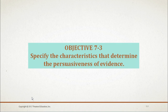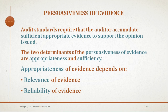Auditing standards require that the auditor accumulate sufficient appropriate evidence to support the opinion issued for the financial statements. The auditor must be persuaded that the opinion issued is correct with a high level of assurance. By combining all evidence from the entire audit, the auditor is then able to decide when he or she is persuaded to issue an audit report. The two determinants of persuasiveness of evidence are appropriateness and sufficiency.